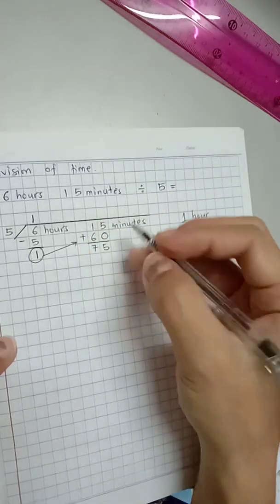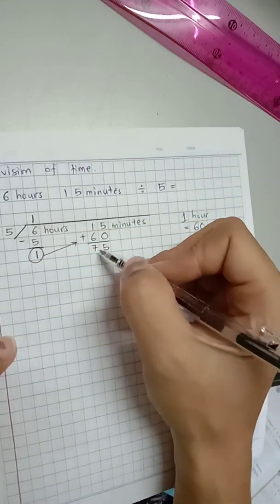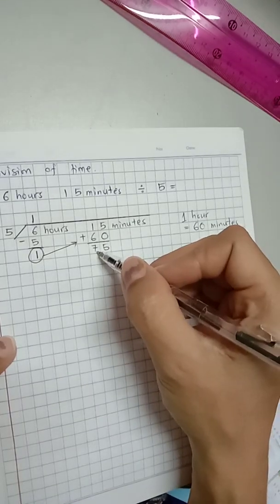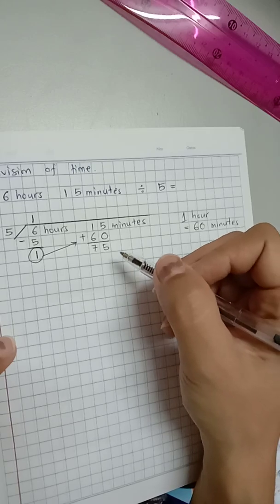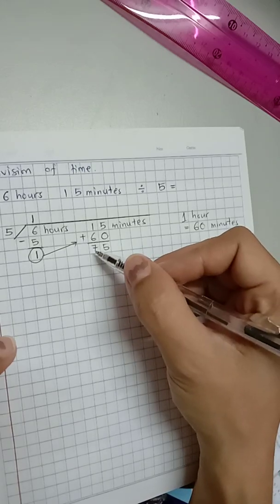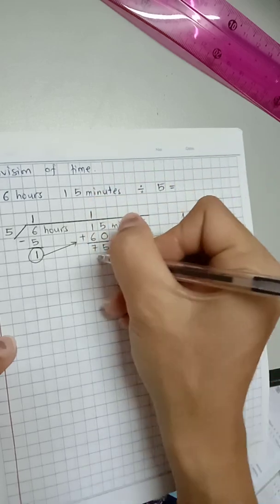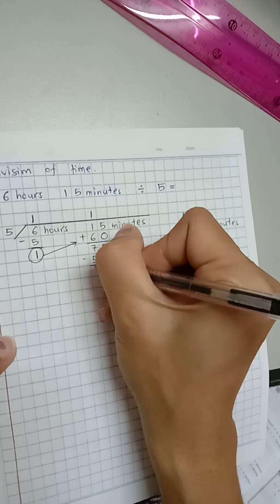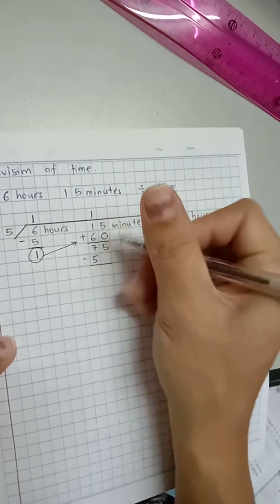Now we're going to do 75 divided by 5. Let's start with 7 first. What is the nearest number to 7 in table 5? Correct. It's 5 times 1. So 5 times 1 is 5. Let's find the remainder, 7 minus 5 is 2.